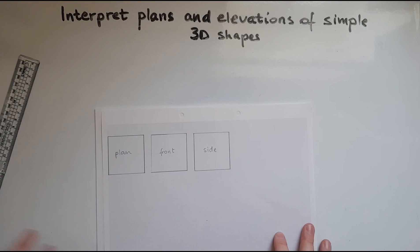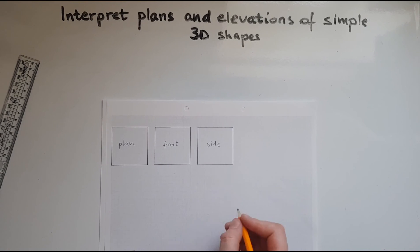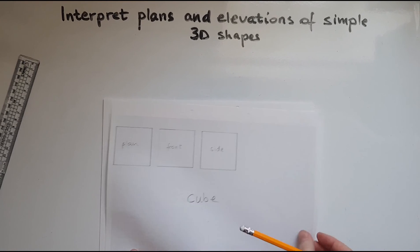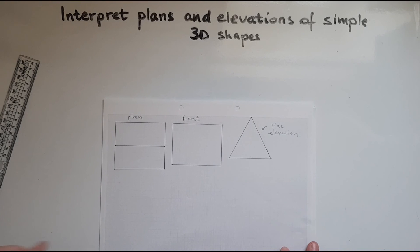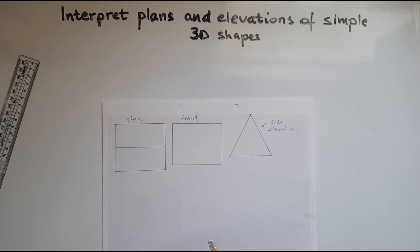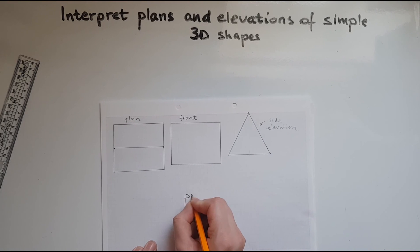Looking at the next one: the plan, the front, and the sides are all squares — so this is a cube. And looking at this next shape: it looks like a rectangle at the top but it has a line across, which was the shape we looked at earlier — and it's the prism. The side is a rectangle, so that confirms it's a prism.